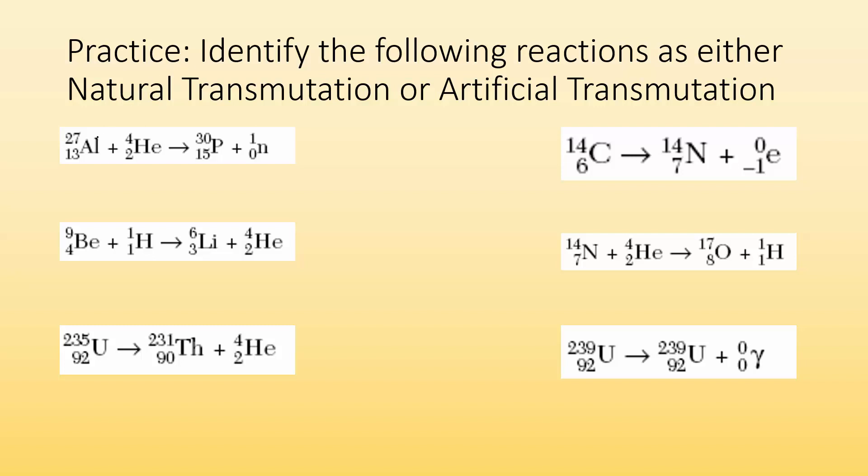Let's take a look. In this first example, we have a nucleus and a particle. This tells me it's artificial transmutation. I have two things in my reactants giving me a new element and a particle given off. Same thing here. I have two things I'm starting with, and I end up with a new element and particles given off. That tells me it's artificial.